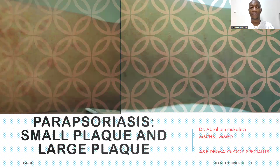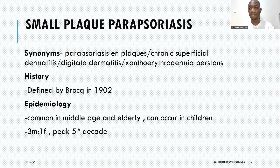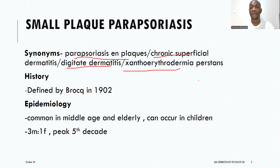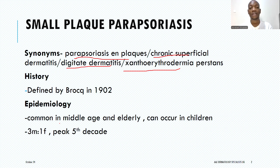Starting with small plaque parasoriasis. Small plaque parasoriasis also carries other names — it has been named variably depending on the literature. It can be called parasoriasis en plaques, or chronic superficial dermatitis. Some literature calls it digitate dermatitis, and it can also be called xanthoerythrodermia perstans. This condition was described together with large plaque parasoriasis by Brock in 1902, who tried to distinguish the different entities between psoriasis, lichen planus, parasoriasis, and how they interconnect to give us this group of disorders — the papulosquamous disorders.